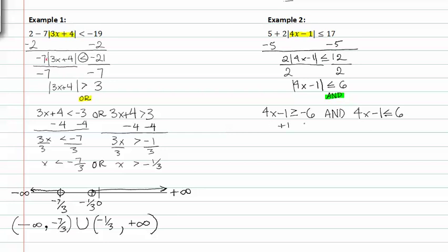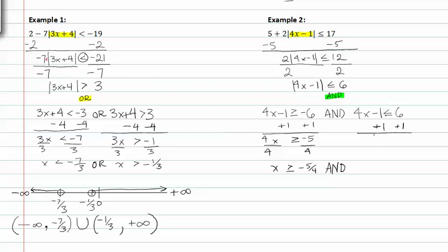Solving for x, dividing by 4 on both sides, we get x is greater than or equal to negative 5 fourths. Solving for x on the other side, we get 4x is less than or equal to 7. Dividing by 4 on both sides, we get x is less than or equal to 7 fourths.